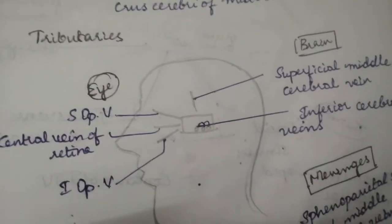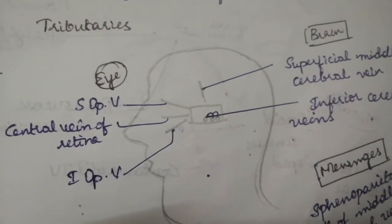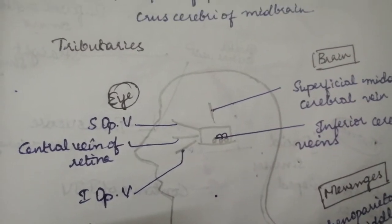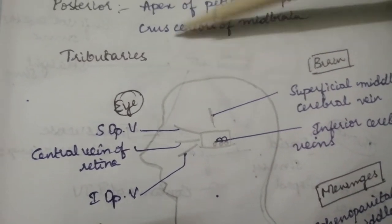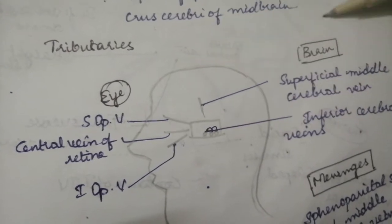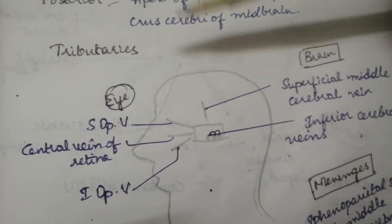When coming into tributaries, I have drawn a picture to be simplified. Your tributaries are from eye, brain and meninges. These are your three tributaries from your eye.